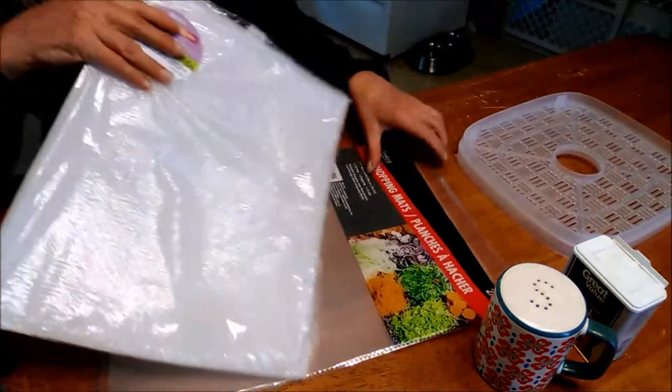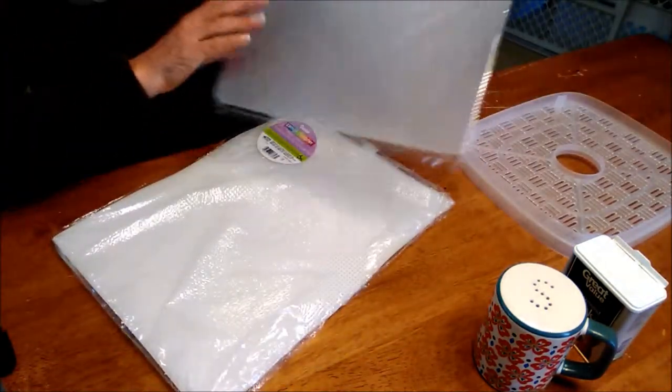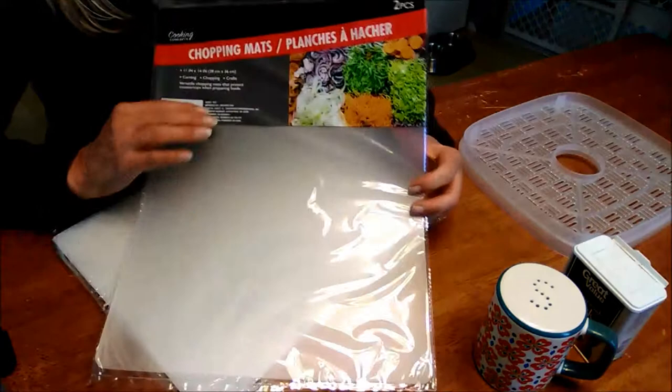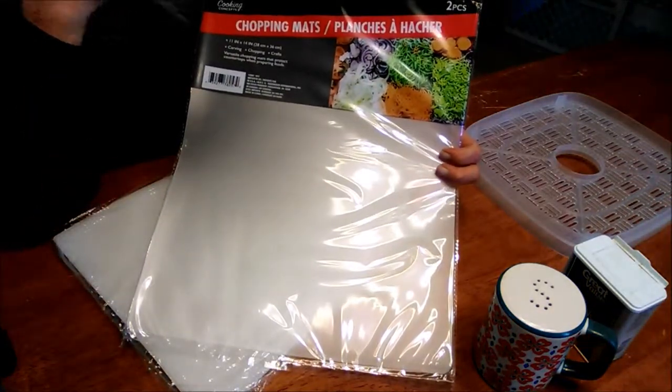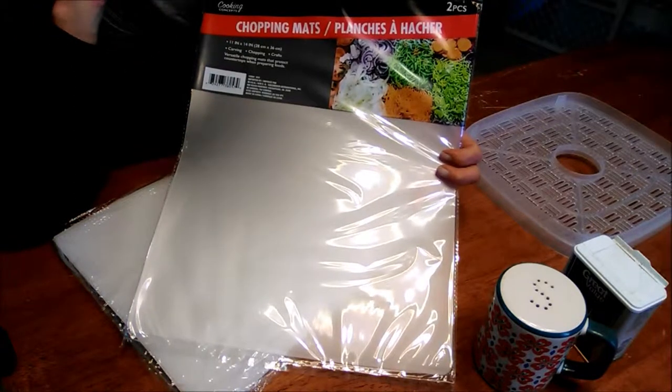The other thing that sometimes you'll want to have when you're dehydrating is a solid surface. Like say you want to make fruit leathers or maybe dehydrate some tomato sauce.